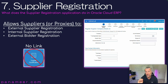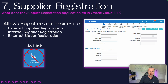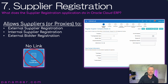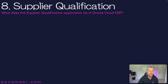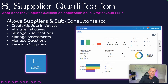Slide seven: what does the Supplier Registration application do in Oracle Cloud ERP? This allows suppliers, or what we call proxies, to externally register — or proxies can internally register on behalf of the supplier for many different reasons. You can also have external bidder registration as well.